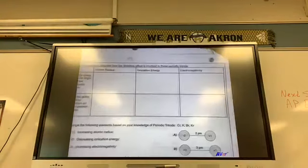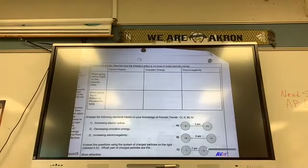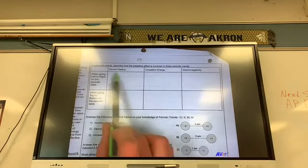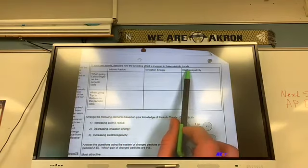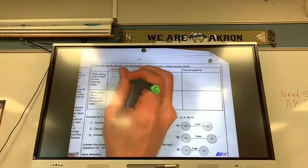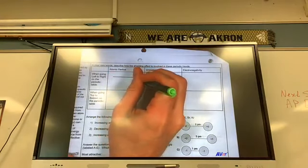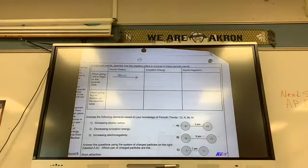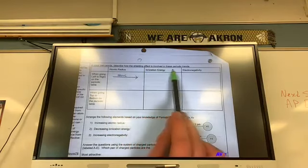Flip the page. We're about to talk about trends. So let's talk about trends. Atomic radius, when going left to right on the periodic table, how would you describe that? What happens to atomic radius? Describe how shielding effect is involved in these periodic trends. So as I'm moving left to right, shielding is the same.